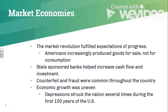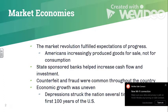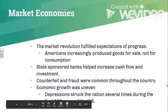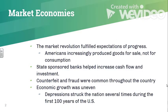The market revolution fulfilled really big expectations of progress the United States had after the revolution. Things were kind of shaky as far as the economy — the United States was trying to figure out whether it was going to produce goods for itself, continue to trade internationally, or be a blend of both. Ultimately it ends up being a blend of both, but during this chapter we really see the growth of domestic industry and regional differences between the north and the south.